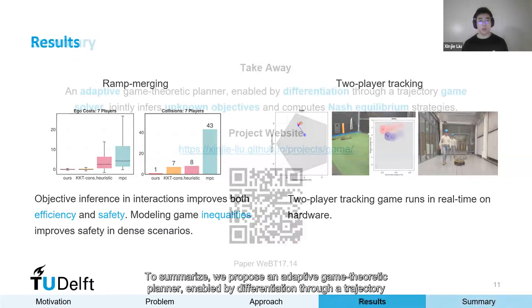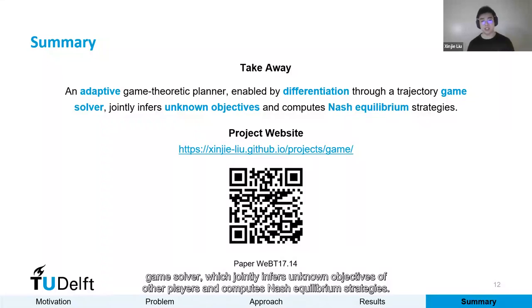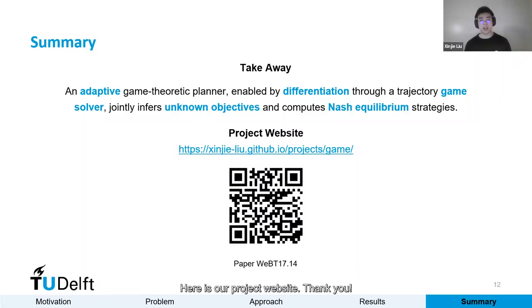To summarize, we propose an adaptive game theoretic planner enabled by differentiation through a trajectory game solver, which jointly infers unknown objectives of other players and computes Nash equilibrium strategies. Here's our project website. Thank you.